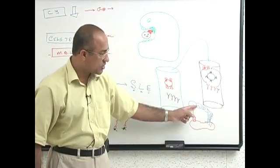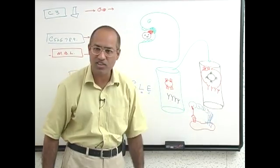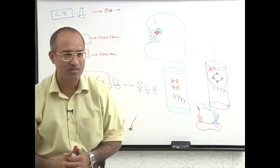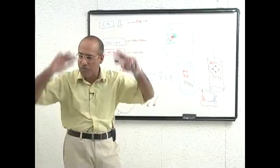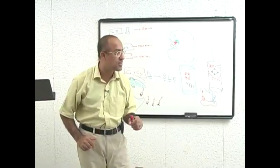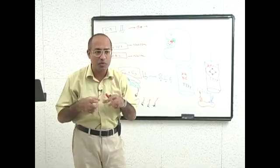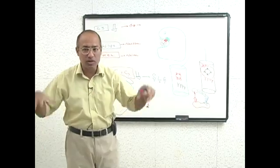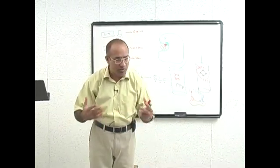C4a, C2a, C3a, C5a are generated. They activate all the mast cells. Mast cells produce vasodilatation, blood pressure will fall after ABO incompatibility. Mast cells will produce histamines in the lungs, bronchoconstriction. So patient develops shock. You are understanding why? Because complements are activated.